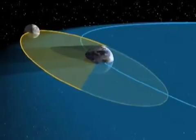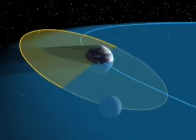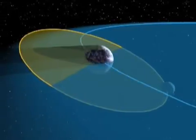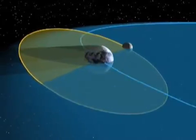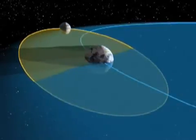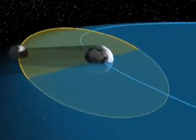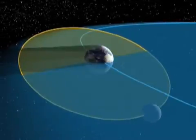The only time the moon will pass directly through the Earth's shadow is when it crosses the ecliptic plane and it is full. At other times, the Earth's shadow will pass to one side or the other of the moon and there will be no eclipse at all.